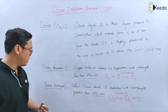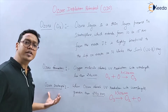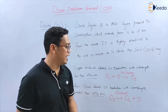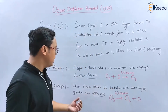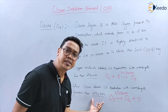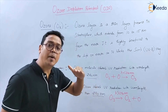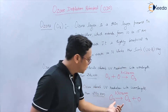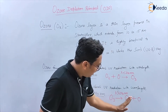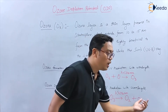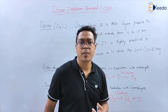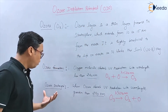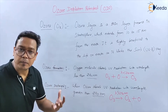This is the formation process. Now how is ozone destroyed? When ozone absorbs ultraviolet radiation with a wavelength greater than 290 nanometers, if the wavelength is above 290 nanometers, the ozone will be destroyed. Ozone will break down into O2 and individual oxygen atoms — oxygen molecules and oxygen atoms. This is the ozone destruction process.